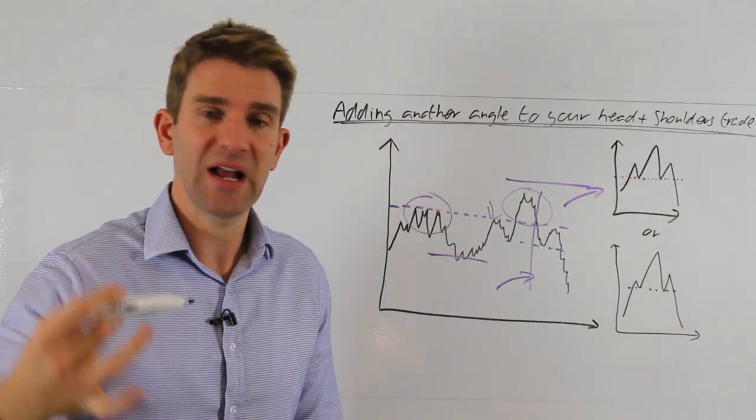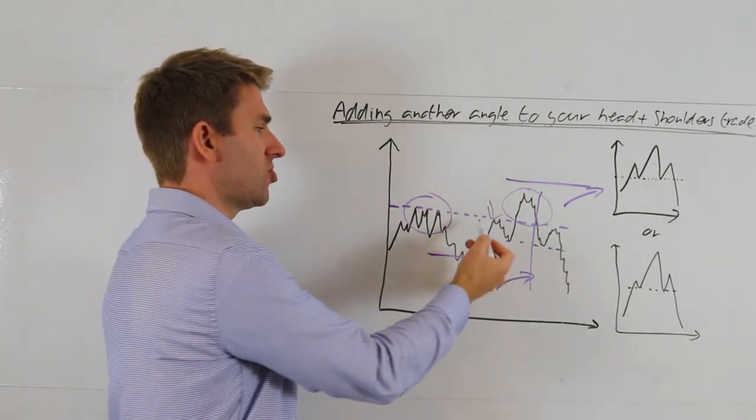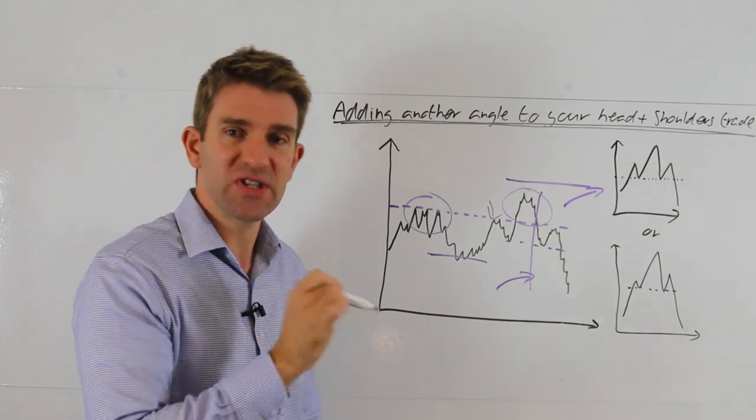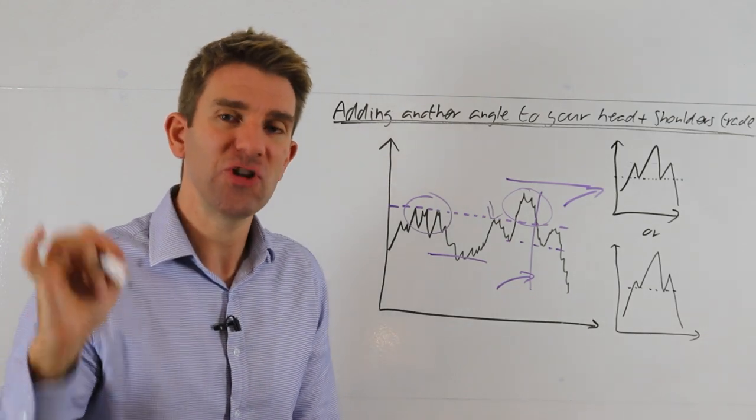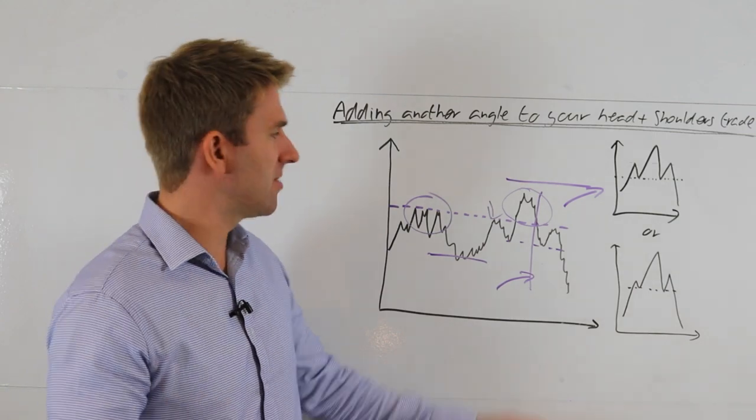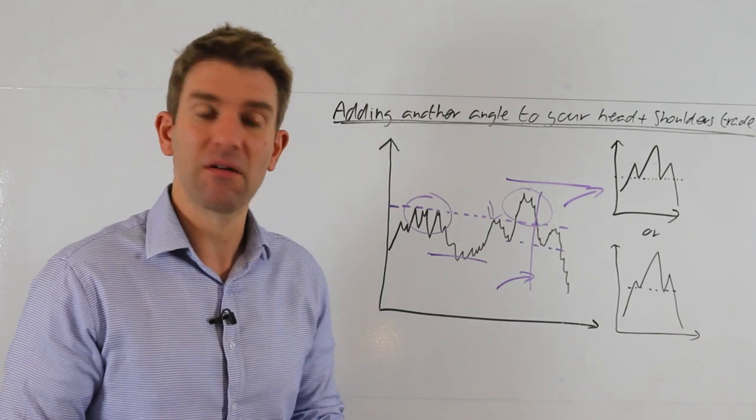But when we add an extra angle, an extra layer into it by leveraging on the fact that the shoulder is stalling at a prior resistance level, then it becomes more of an interesting trade for me. It becomes something that's got an additional edge to it. It becomes something that's combining the head and shoulders with the bull trap and I like that kind of thing.